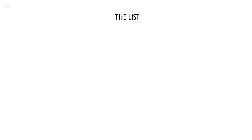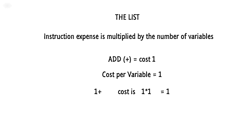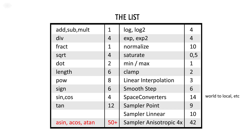In order to give you something to relate to, I will show you a list of different instruction costs. Across the board, instruction expenses are multiplied by the number of variables. For example, the add instruction has a cost of one — using a single value means cost is 1×1=1. A vector2 add has a cost of 2×1=2. A vector3 add costs 1×3=3, and so on. There's not much to say except look at the list and compare it to what you do in your shader. One thing that needs to be noted: the inverse trigonometry functions — ACN, ACOS, ATAN — are evil and you should not use them. There is no hardware support for them, so everything is done in software. Only use them if you really, really need to.